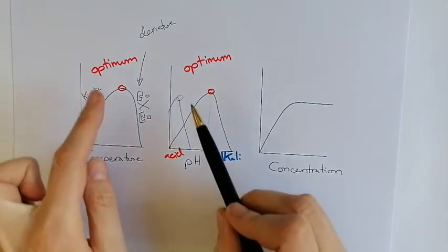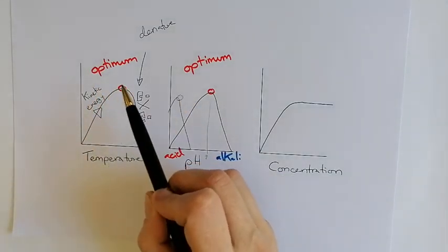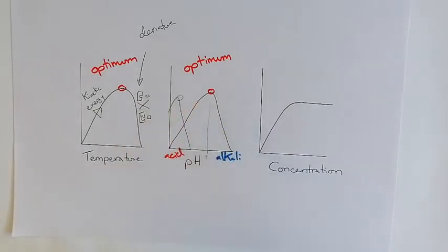So for temperature and pH, there's an optimum level. Too far cold, too far hot, it doesn't work very well. Too far acid, too far alkali, it doesn't work very well.